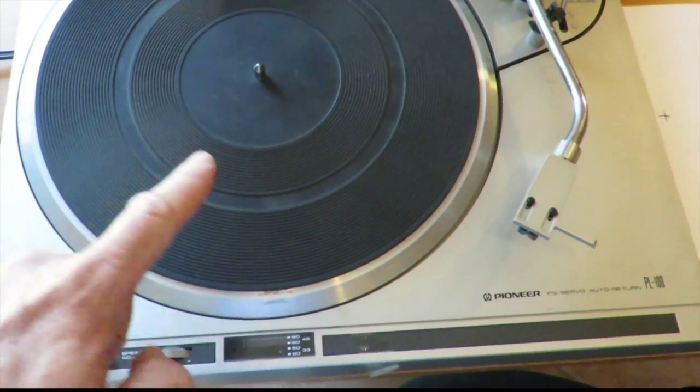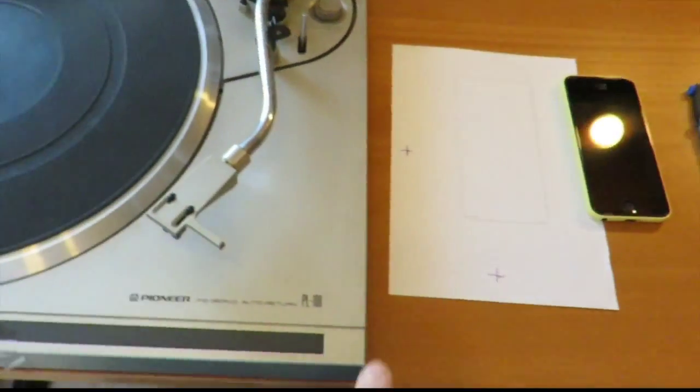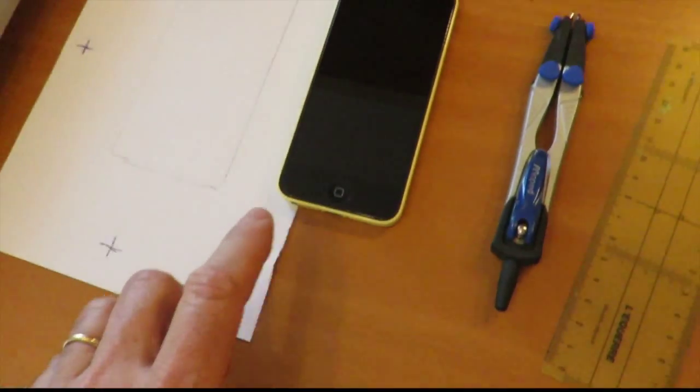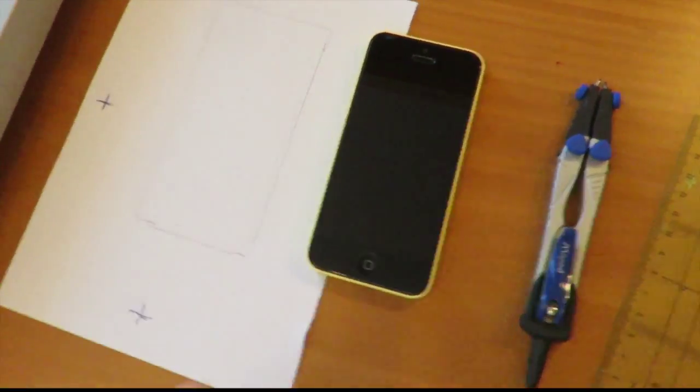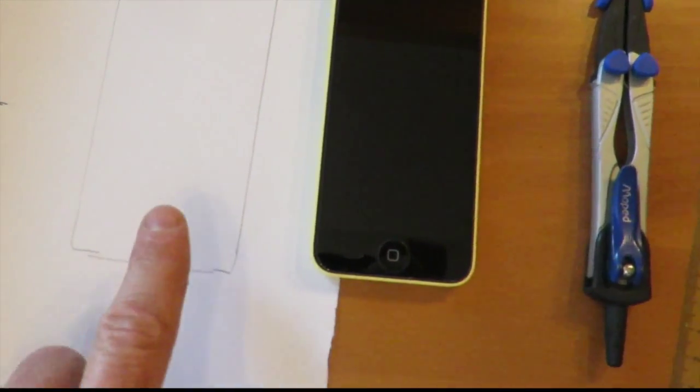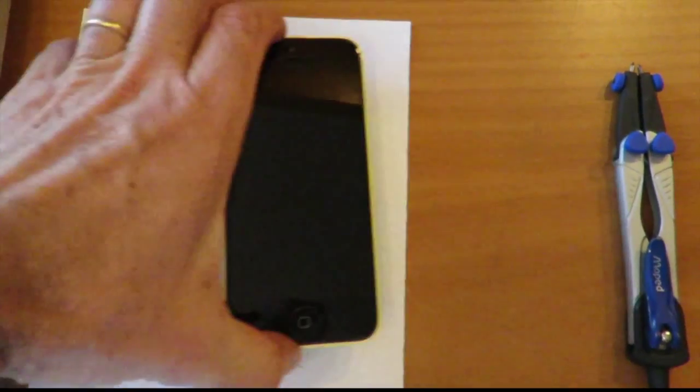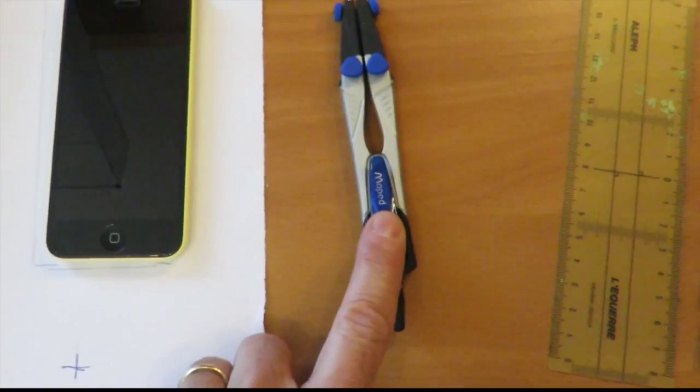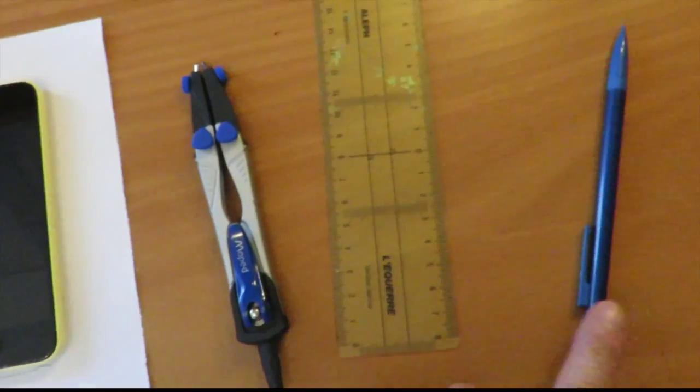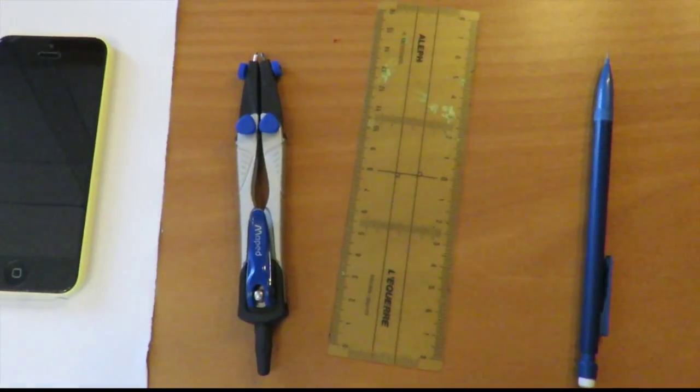So what do you need for this activity? You need here a record player. Of course, you need a smartphone with inside, I will show you later, application sensor kinetics. Here, a piece of paper you see with some kind of frame which corresponds to the smartphone here. A hole compass here, a hole here, a pencil here.